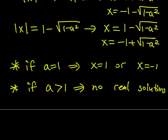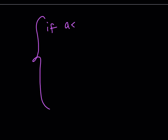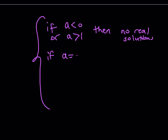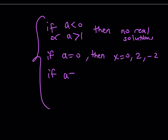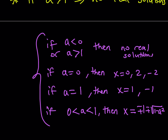To summarize: if a < 0 or a > 1, there are no real solutions. If a = 0, there are three solutions: x = 0, 2, or -2. If a = 1, there are two solutions: x = 1 or x = -1. If 0 < a < 1, there are four solutions: x = ±(1 + √(1 - a²)) and x = ±(1 - √(1 - a²)).